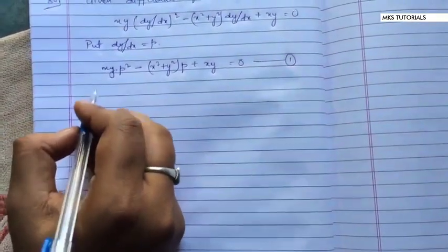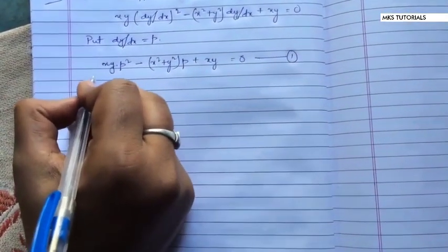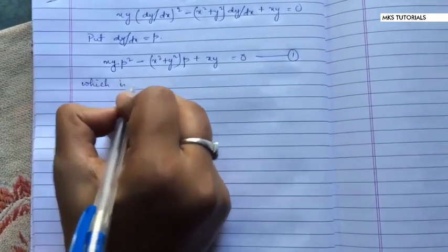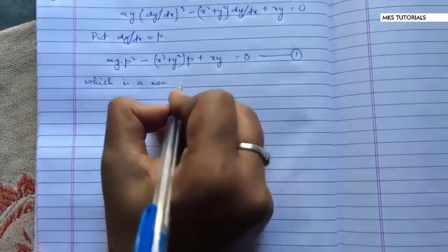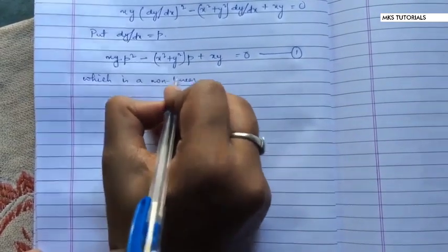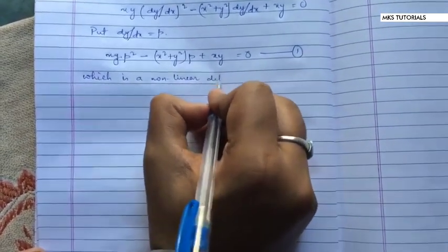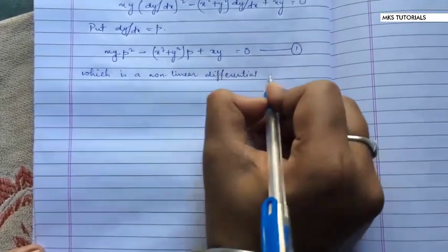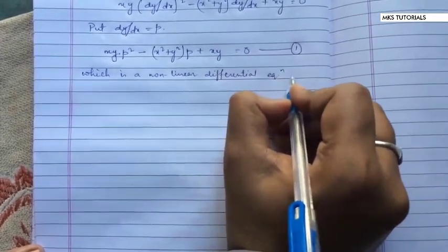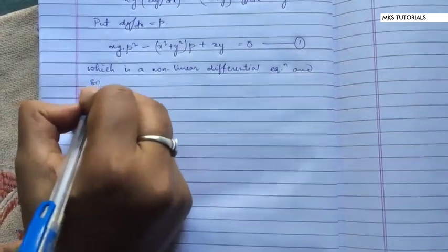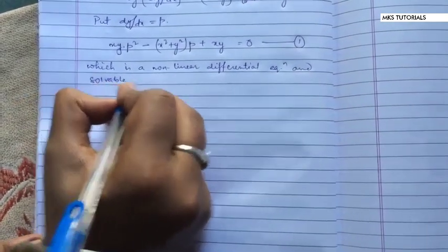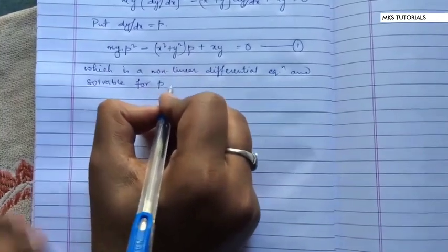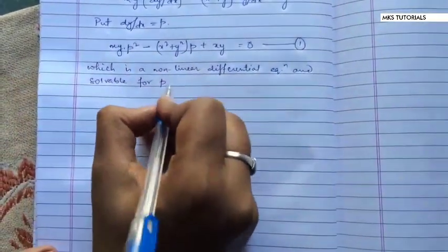Now, यह क्या है — which is a non-linear differential equation and solvable for p. किसके लिए? यह p के लिए जाएगा, because p के लिए देखो यह quadratic equation बना है, that's why.